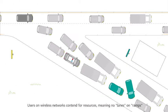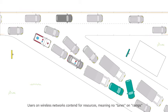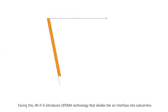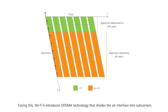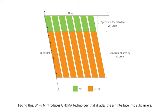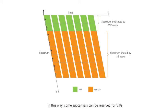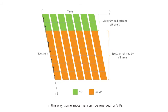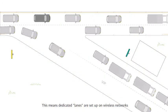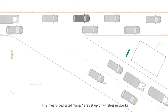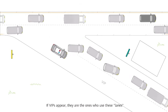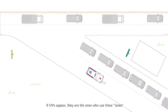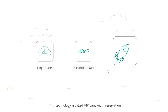Users on wireless networks contend for resources, meaning no lanes on ramps. Facing this, Wi-Fi 6 introduces OFDMA technology that divides the air interface into sub-carriers. In this way, some sub-carriers can be reserved for VIPs, meaning dedicated lanes are set up on wireless networks. Ordinary users can use these lanes if there are no VIPs. If VIPs appear, they are the ones who use these lanes. This technology is called VIP bandwidth reservation.